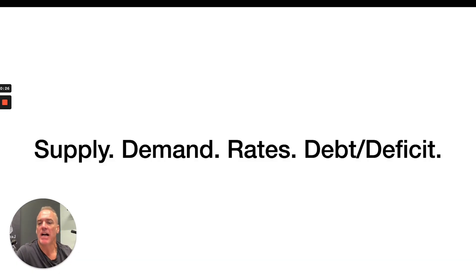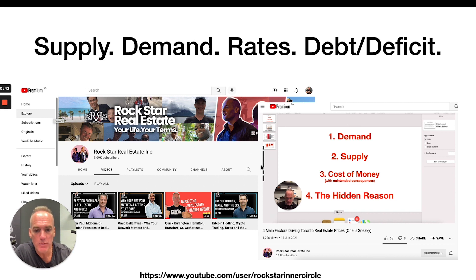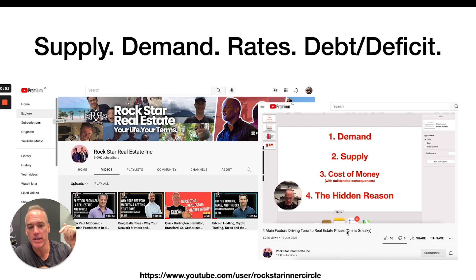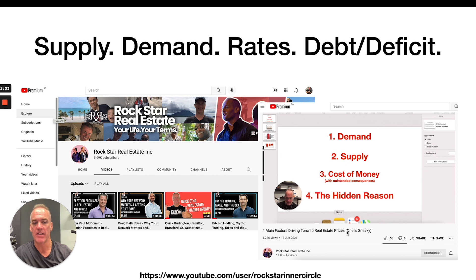In the past we've looked at supply of real estate specifically in the greater Toronto area, demand, interest rates, debt and deficit. If you've missed that and want to catch up, go to our YouTube channel — youtube.com/user/rockstarinnercircle — and find the video 'Four Main Factors Driving Toronto Real Estate Prices.' We'll put the URL in the description. We go into detail about housing supply and demand, and a lot of the real estate prices begin to make sense. But it's this hidden reason — the Canadian money supply — that I wanted to dive a little bit deeper into today.